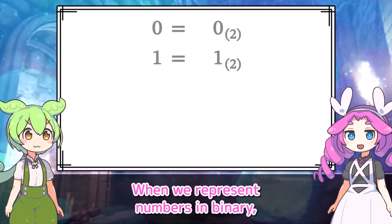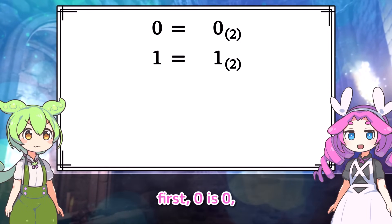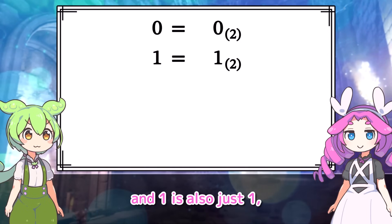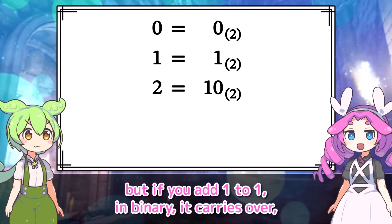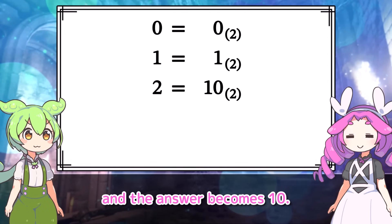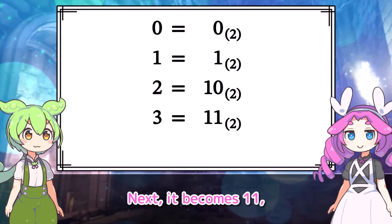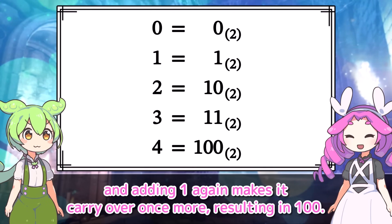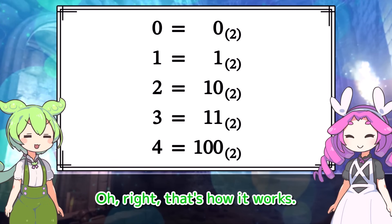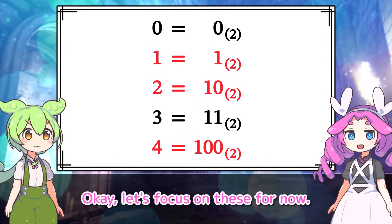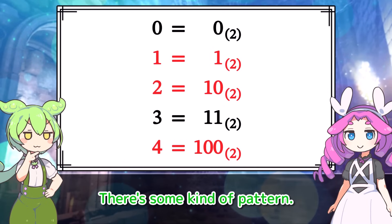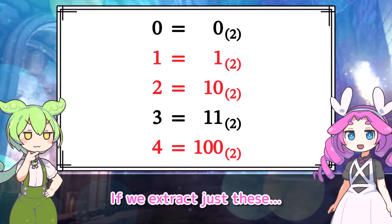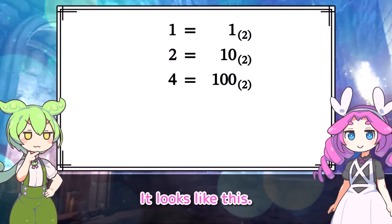When we represent numbers in binary, 0 is 0, and 1 is also just 1. But if you add 1 to 1 in binary, it carries over, and the answer becomes 10. Next, it becomes 11. And adding 1 again makes it carry over once more, resulting in 100. Oh right, that's how it works. Okay, let's focus on these for now. There's some kind of pattern. If we extract just these, it looks like this.